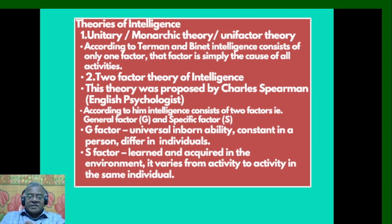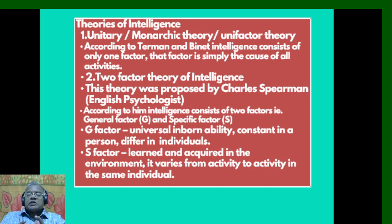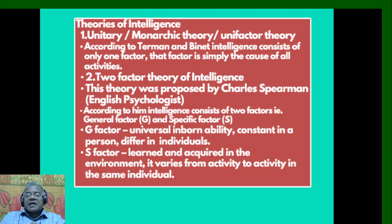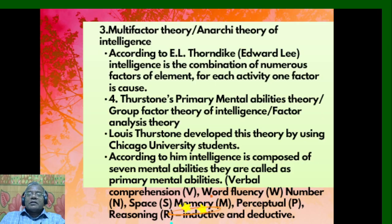What are the various theories of intelligence? First, the Unitary or Unifactor Theory: according to Terman and Bennett, intelligence consists of only one factor, which is simply the cause of all activities. Second, the Two-Factor Theory proposed by Charles Spearman, an English psychologist. According to him, intelligence consists of two factors: the General factor (G) and the Specific factor (S). The G factor is the universal inborn ability, constant in a person but differing from individual to individual. The S factor is learned and acquired from the environment and varies from activity to activity in the same individual.